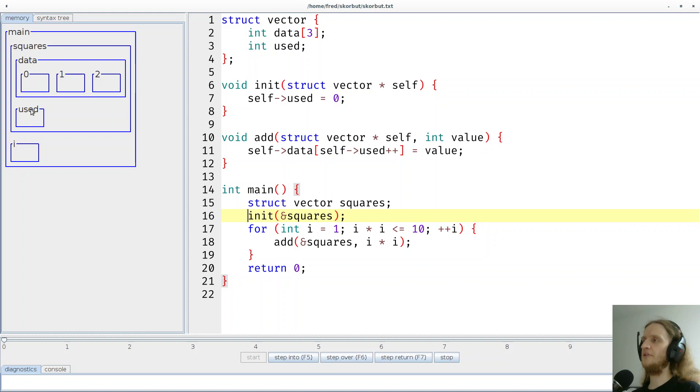We should probably initialize the used variable to zero and that's what the init function is for. So we call the init function, which takes a pointer to a vector and we pass a pointer to squares. So here you can see that self indeed points to squares. And now we can initialize the used variable via the self pointer.